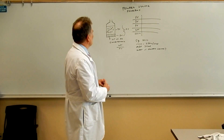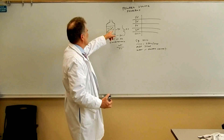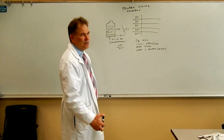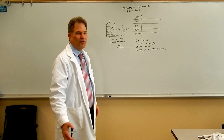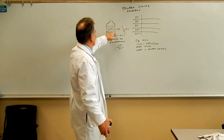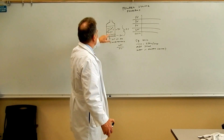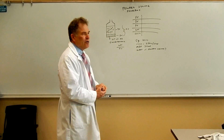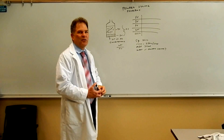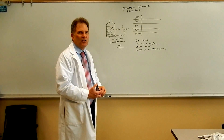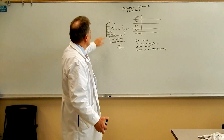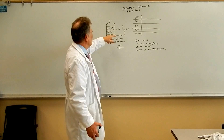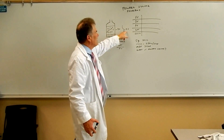When you reconstitute it, you add a diluent, which is usually water, though it could be other things. The amount of water or whatever you're adding is called the diluent. The powder volume plus the diluent volume equals the final volume.